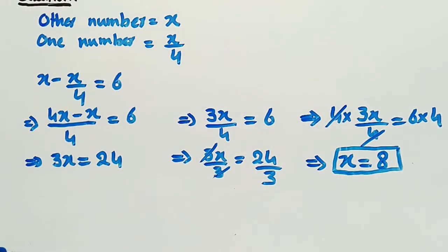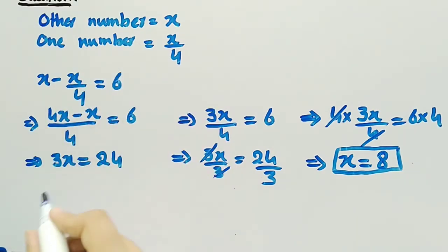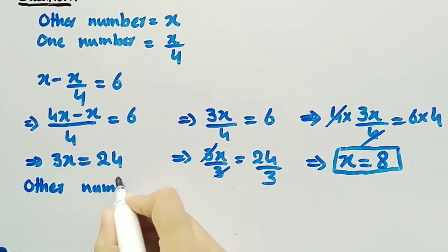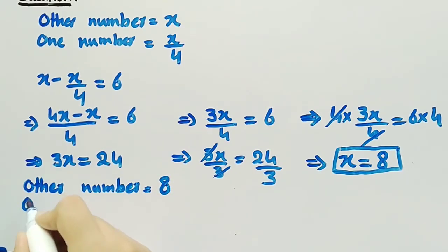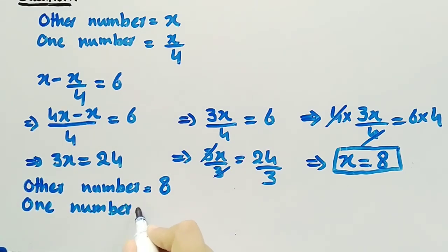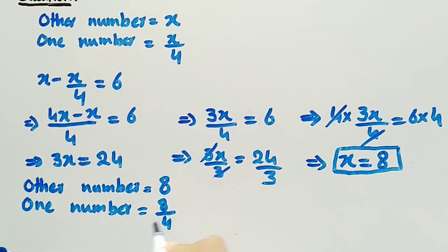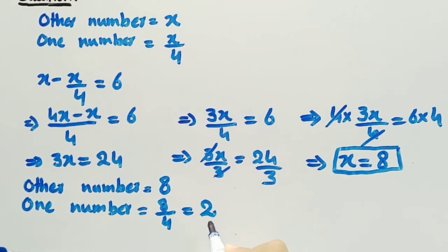Now, by substituting x equal to 8, we can get the other number and one number. Since the other number is equal to x and x is equal to 8, the other number is equal to 8. One number is equal to x by 4, and x is equal to 8, so one number is equal to 8 divided by 4, which is equal to 2.